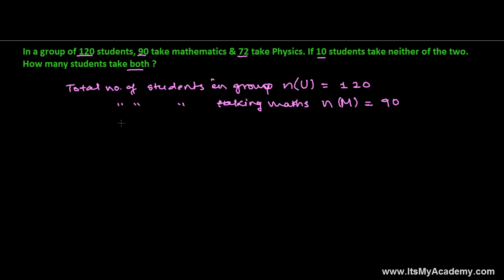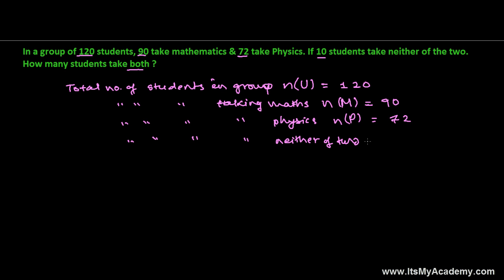The total number of students taking physics — let me represent that by N(P), P for physics — they are 72. And the number of students taking neither of the two subjects means they are not even learning math, not even physics. So I'm writing the complement of M union P, which represents students not in either subject, and that is 10. So we can solve this.